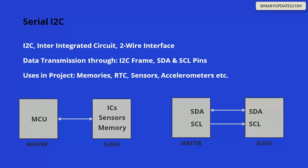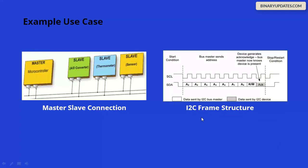I2C is preferred for performance-critical applications such as healthcare products, military hardware, or precision sensors. Use cases include EEPROM memories, real-time clocks, body temperature sensors, and accelerometers in drones. I2C is the right choice when performance matters. The protocol was developed by Philips and is time-tested and widely available.